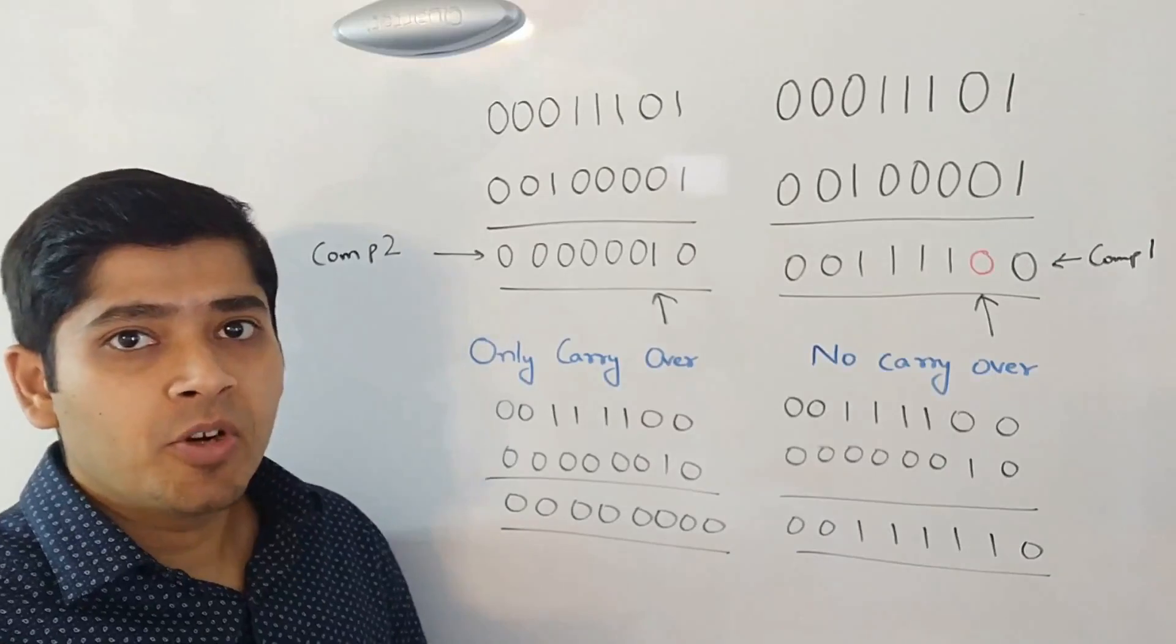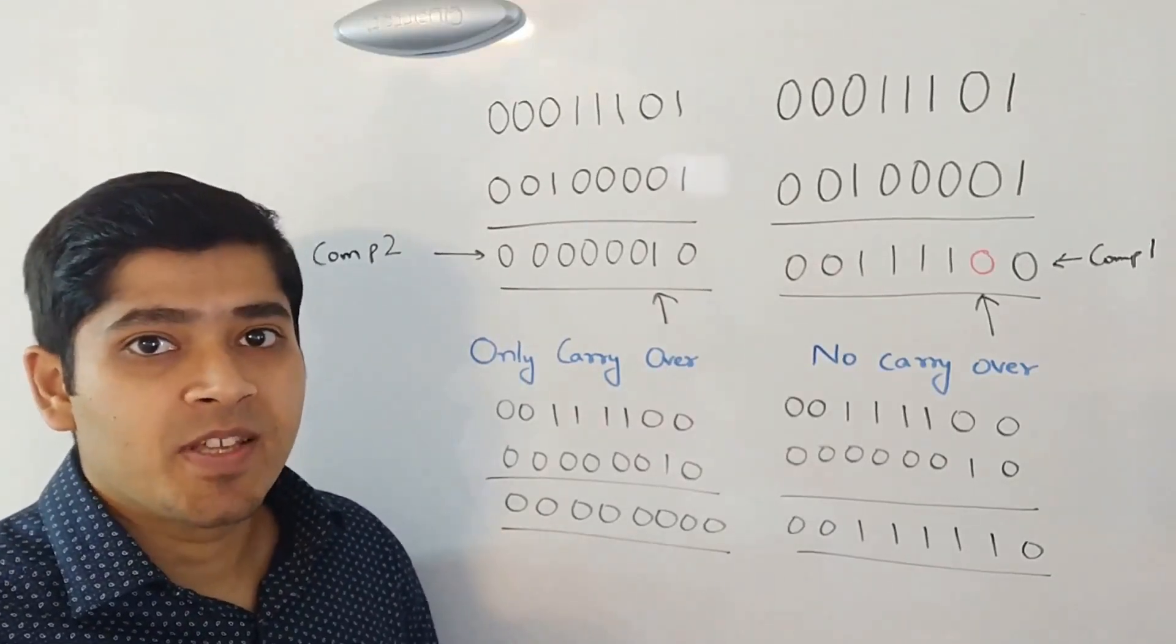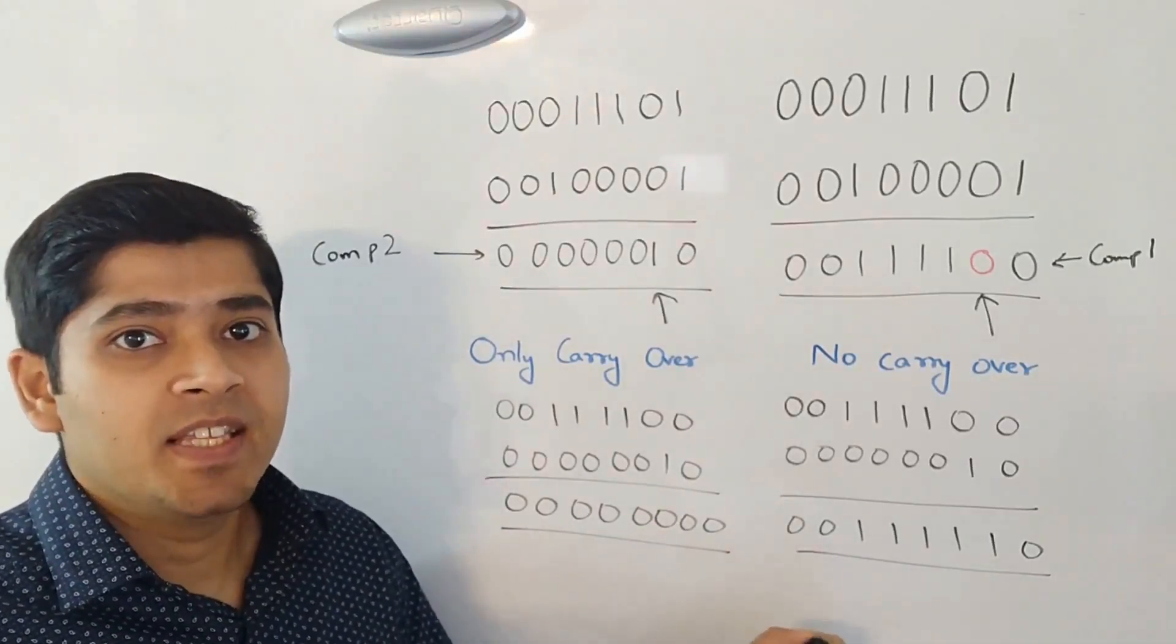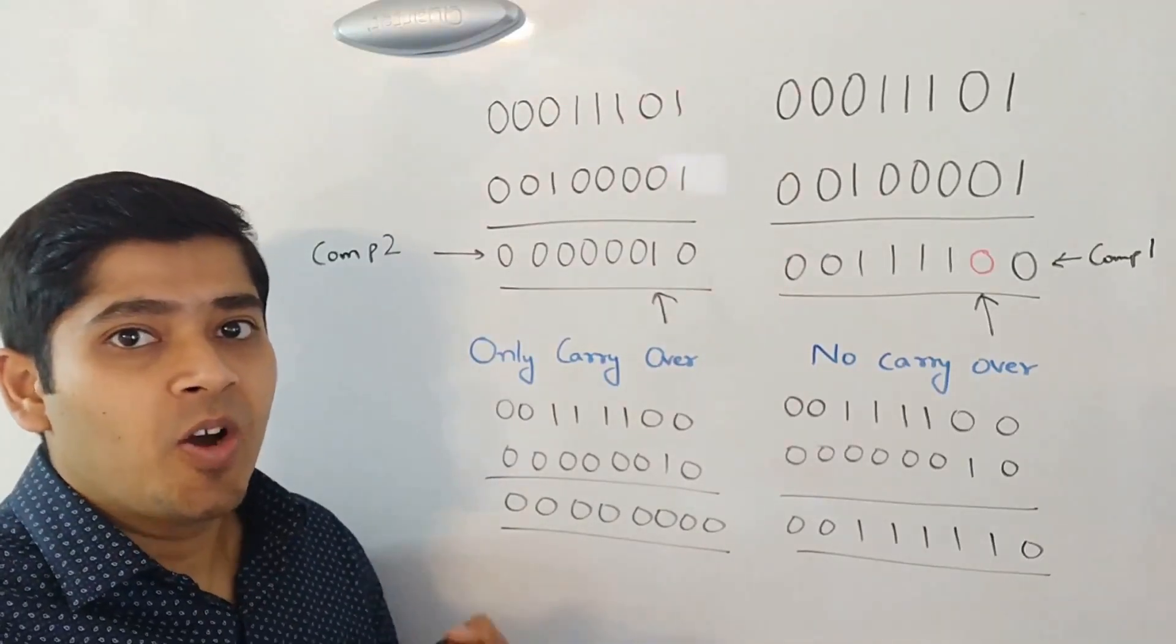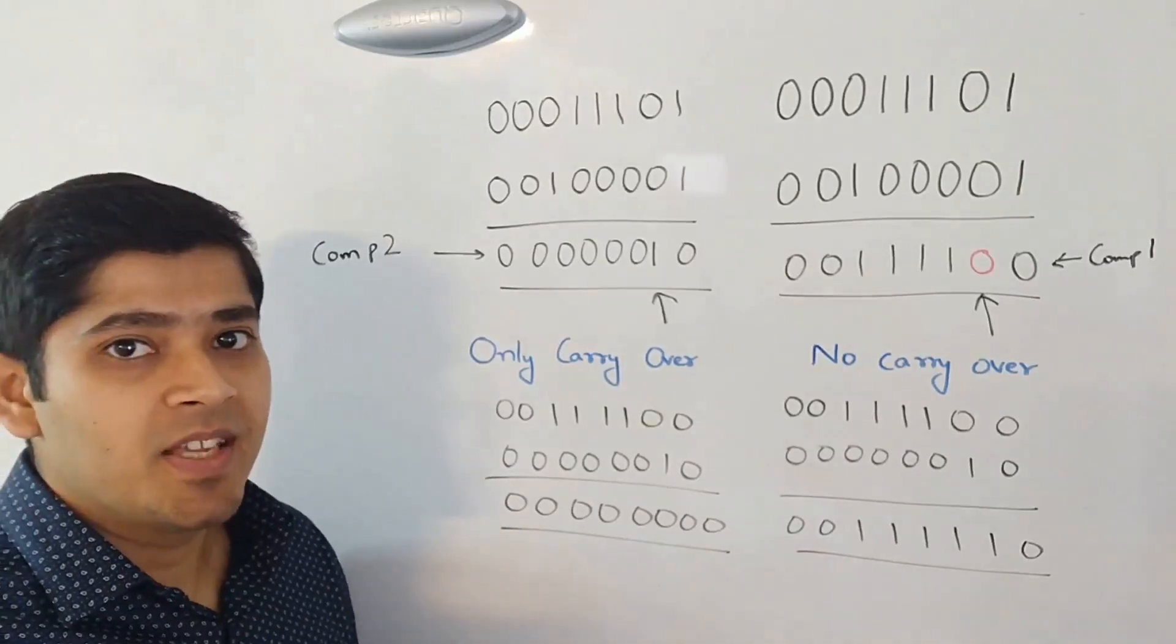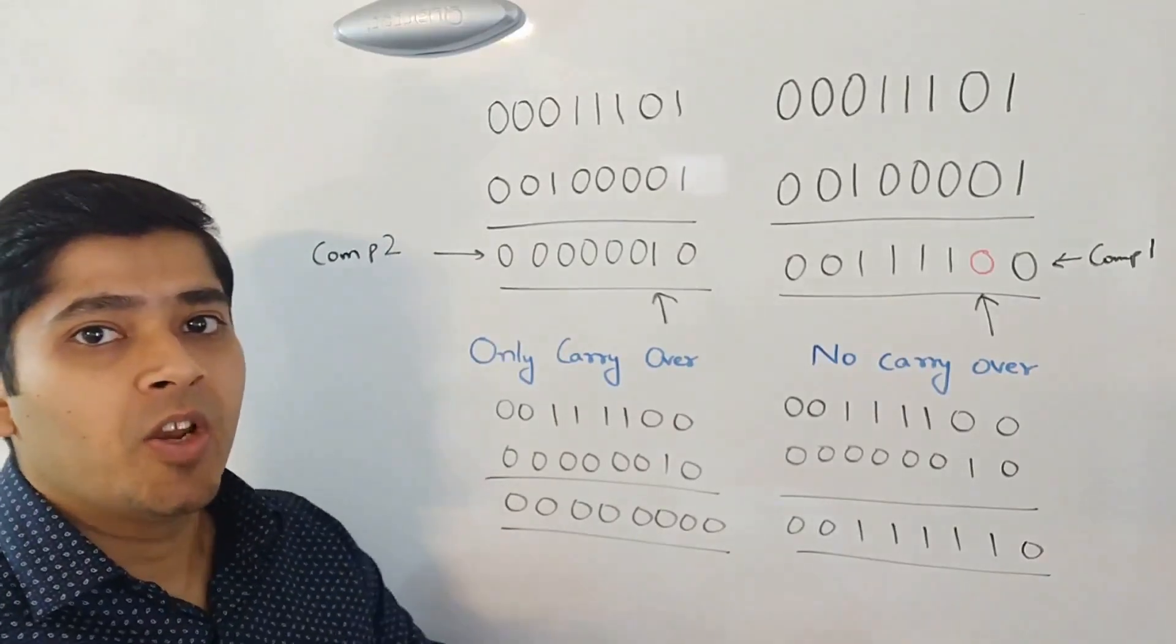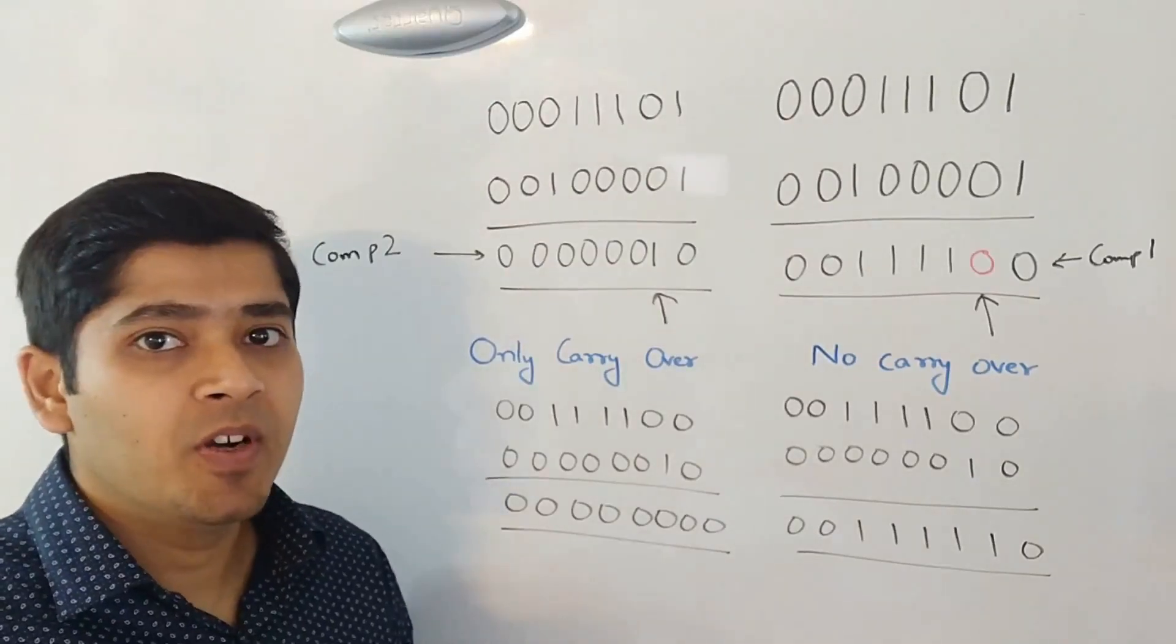what we did is we took component one and component two and we applied the same process. We applied the non carry over addition on them and we can see the result set here and then we applied just carry over on those two components and we can see the result is simply a zero. Once the carry over, only carry over part is zero, then we know that the non carry over part is actually the final sum that we were looking for.